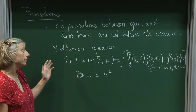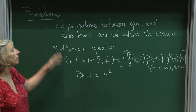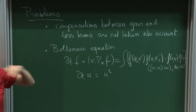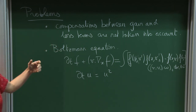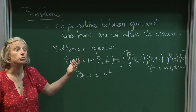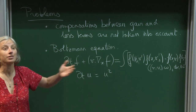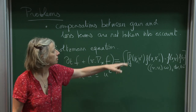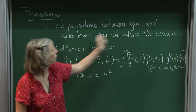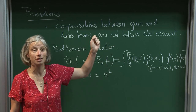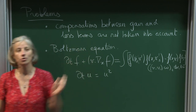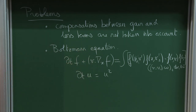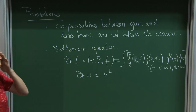Even close to equilibrium, you are not able to take into account the fact that you are at equilibrium, where the compensation is exact. That's really the bad thing with this proof.